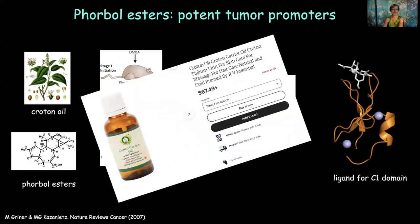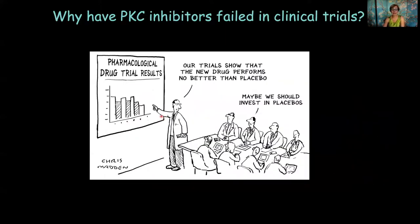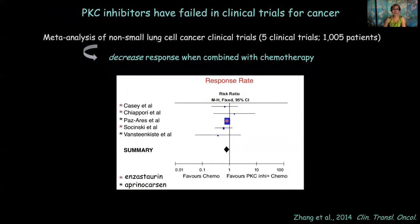I was horrified to find that you can actually buy croton oil — apparently it's used for hair care and skin care, though most user reviews complain about severe irritation and lesions on the skin. Because binding of ligand to the C1 domain activates PKC and the normal agonist is diacylglycerol, the dogma was established that protein kinase C must be an oncogene. As a consequence, PKC has been targeted in cancer clinical trials for three decades. These inhibitors of PKC have pretty much failed — patients that got chemotherapy alone had a better outcome than patients who had chemotherapy coupled with PKC inhibitors.